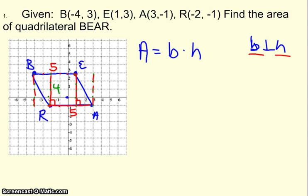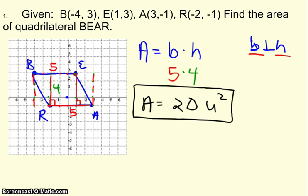So we have just determined that the base is 5 and the height is 4. So to find our area, the base is 5, the height was 4. We get the area of this quadrilateral BEAR to be 20 units squared. Don't forget your label.